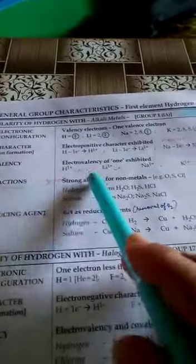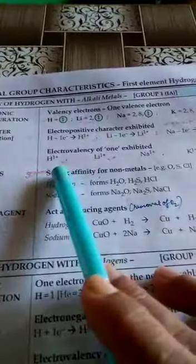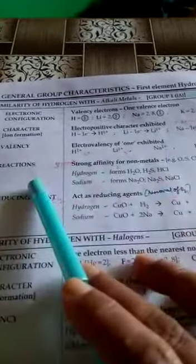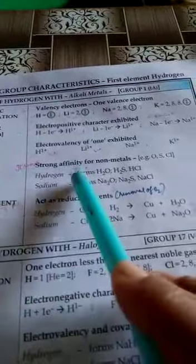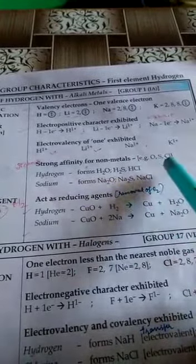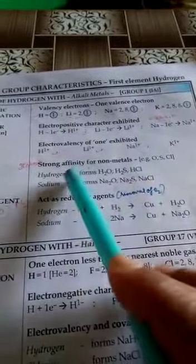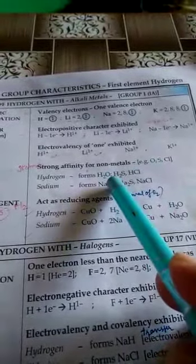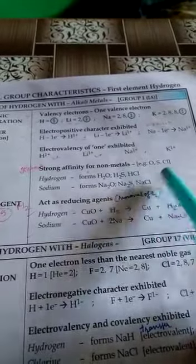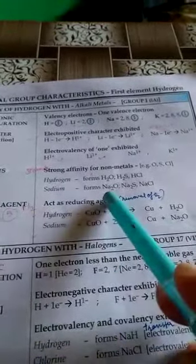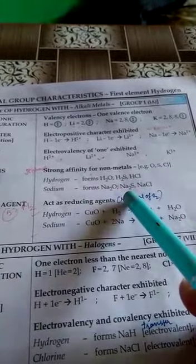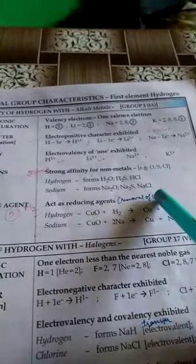Now look at the valency of all these. You will see that valency of all these elements is plus 1. Similar valency. Then come to the reactions. Now all of these show strong affinity for non-metals like oxygen, sulfur, and chlorine. Hydrogen with oxygen forms H2O, with sulfur forms H2S, with chlorine forms HCl. Similarly, sodium with oxygen forms Na2O, with sulfur forms Na2S, and with chlorine forms NaCl.